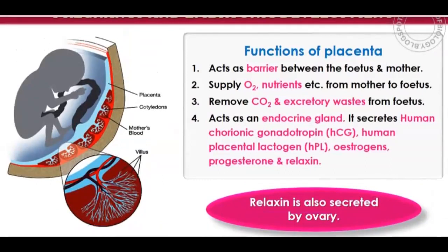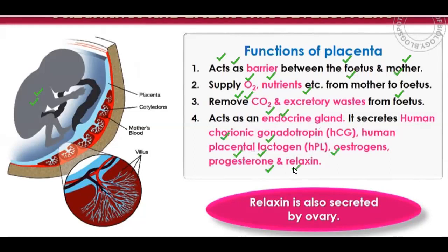The functions of the placenta include: acting as a barrier between the fetus and mother, allowing oxygen and nutrients to pass to the fetus, and removing carbon dioxide and other excretory wastes from the fetus. The placenta also acts as an endocrine gland, secreting human chorionic gonadotropin (HCG), human placental lactogen (HPL), estrogen, progesterone, and relaxin.